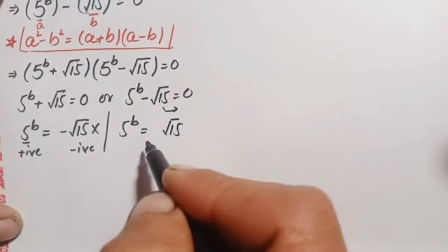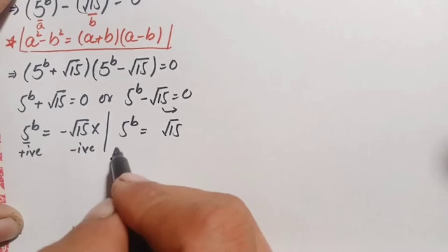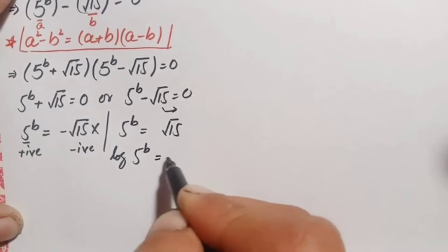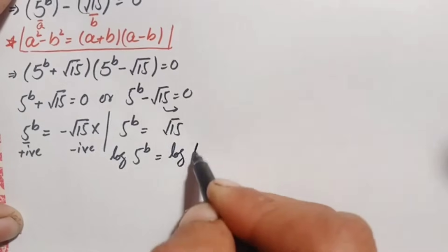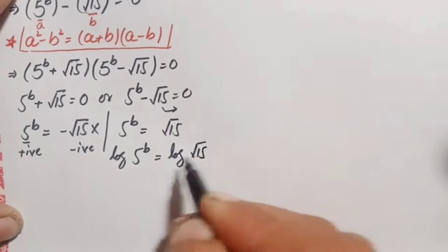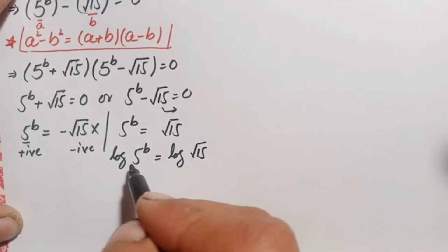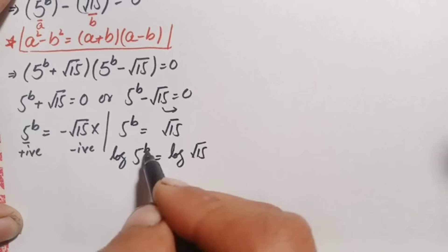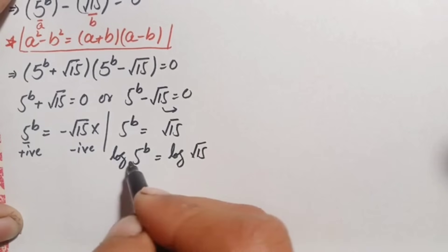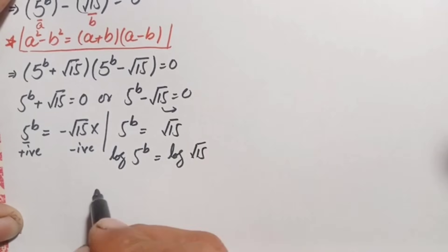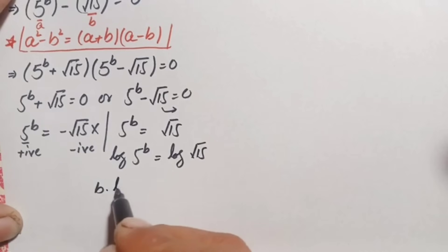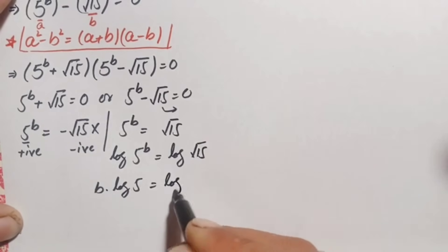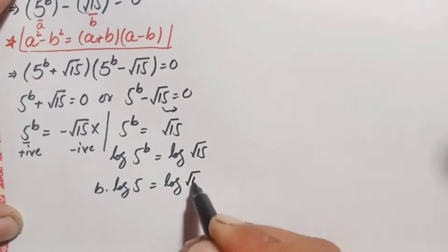From the second equation, 5 raised to power b equals positive square root of 15. We take the common logarithm on both sides, giving log of 5 raised to power b equals log of square root of 15. Using the logarithm identity log of a raised to power x equals x times log of a, the left hand side becomes b times log of 5 equals log of square root of 15.